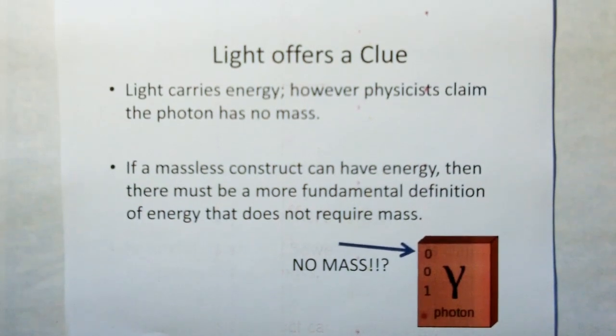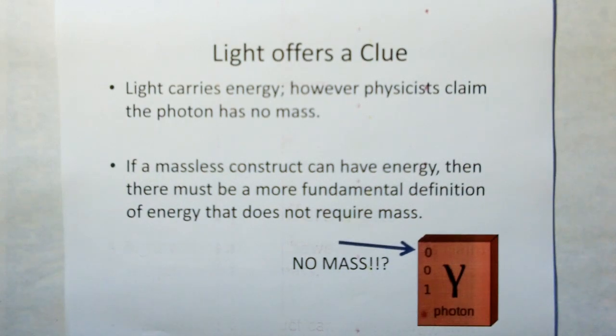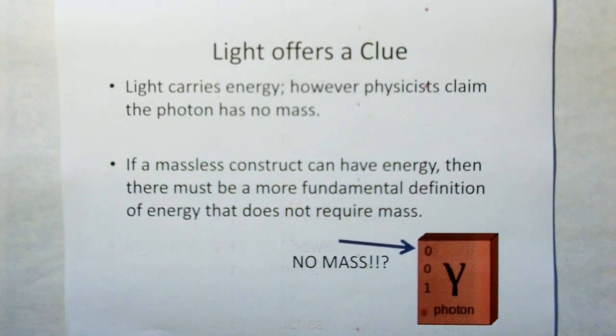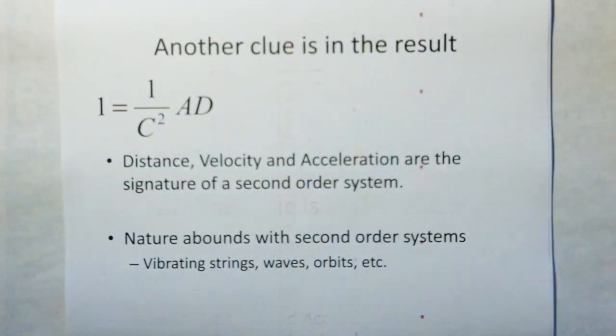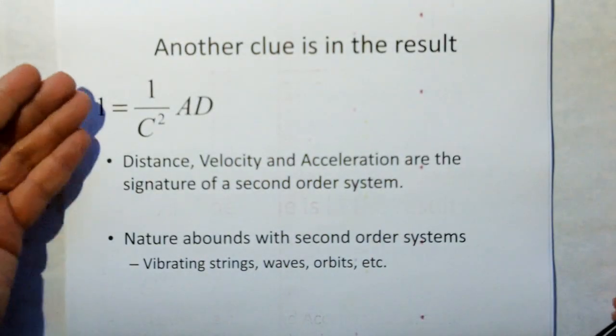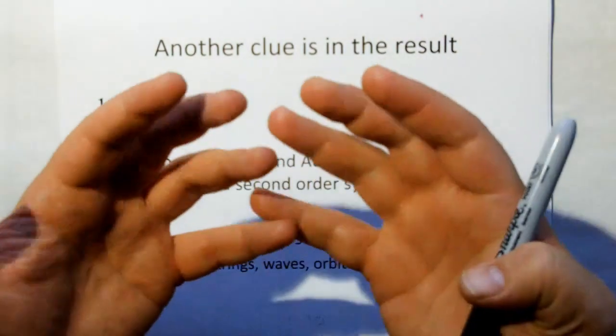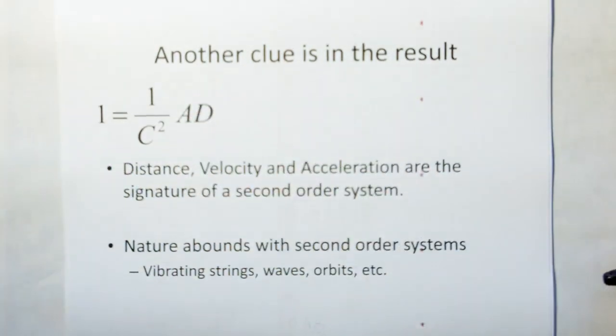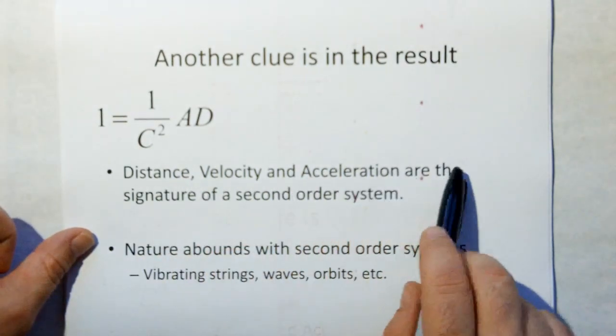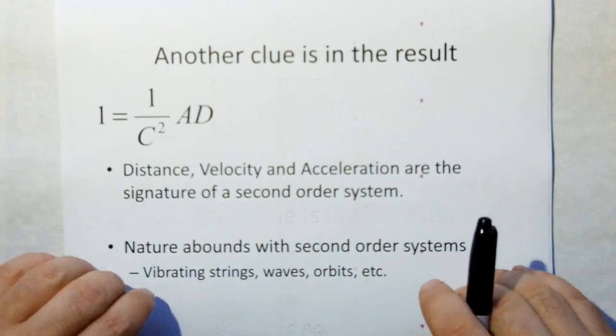But light offers us a clue. They've had the clue, but they totally ignored it. Light carries energy. However, physicists claim the photon has no mass. So if a massless construct can have energy, then there must be a more fundamental definition of energy that does not require mass. And another clue is in the result. Distance, velocity, acceleration are the signature of a second order system. Nature abounds with second order systems.